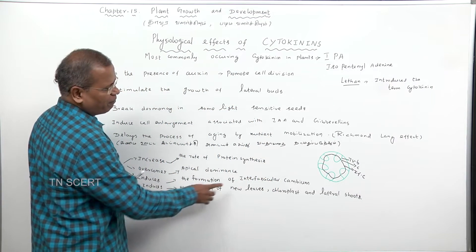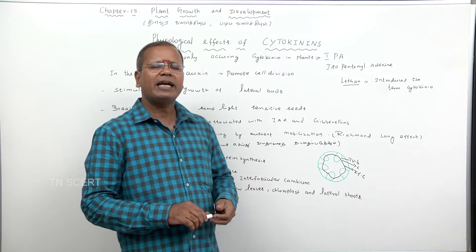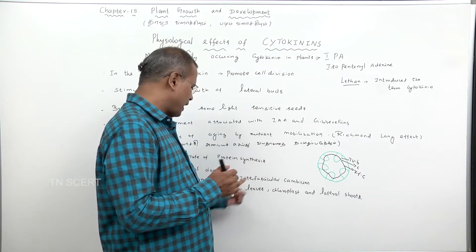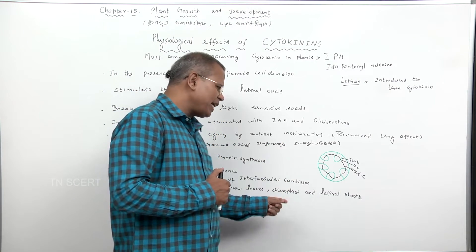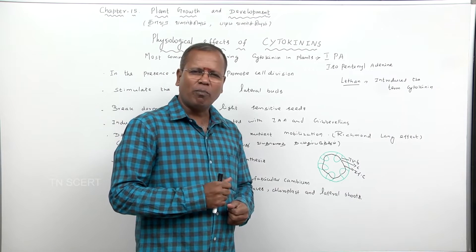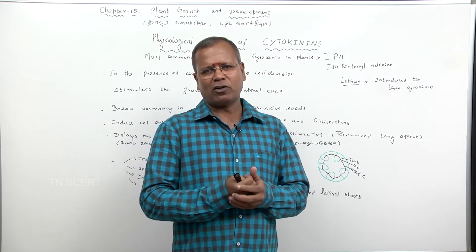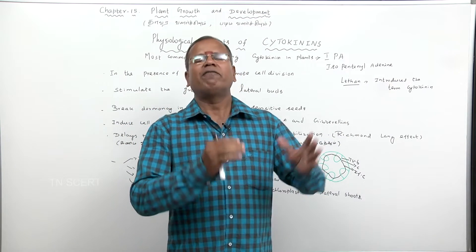Cytokinin is responsible for the formation of new leaves, chloroplasts, and lateral shoots.